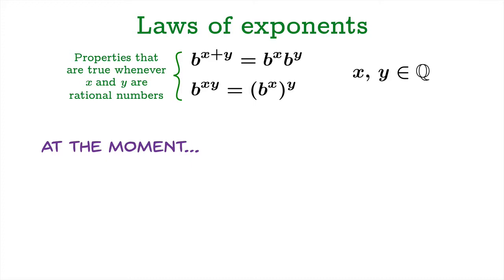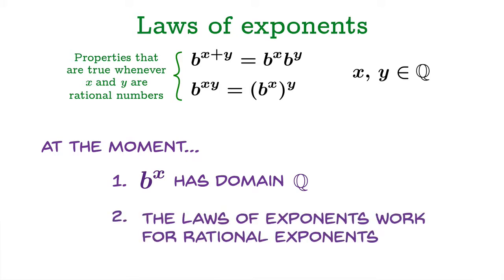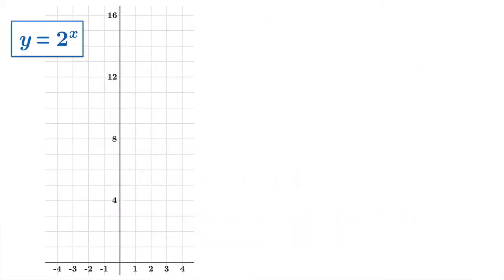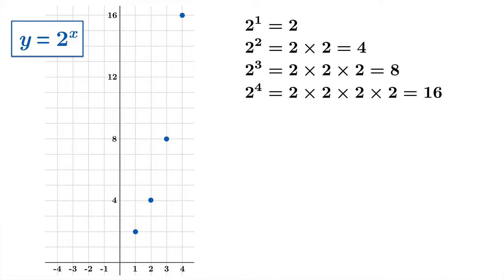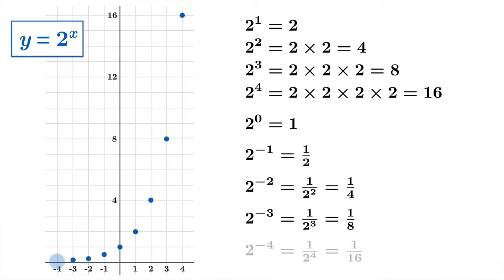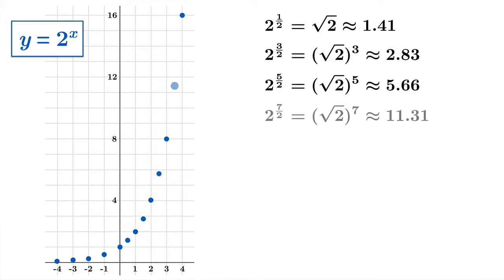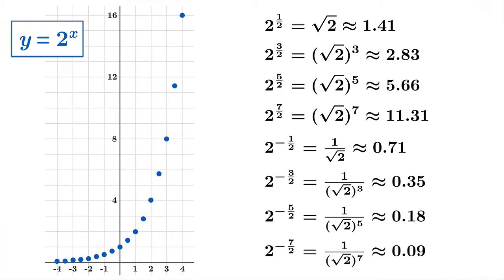At this point, we've defined b to the x with domain Q — we can exponentiate anything rational, and the laws of exponents work for rational exponents. But there are many other kinds of numbers. Taking base 2 as an example, you can raise 2 to various natural numbers, to 0, to negative integers, and to rational numbers, taking roots and powers of roots. A picture starts to take shape of what the graph of 2 to the x looks like, though if you only allow rational exponents, you'd get a sort of dusty curve with holes for irrational values.